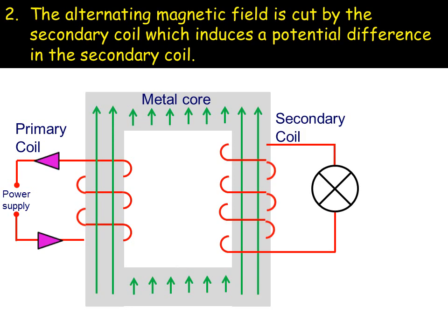The secondary coil is inside that alternating magnetic field. So the wires of the secondary coil cut through the alternating magnetic field and this induces a potential difference, a voltage across that secondary coil.